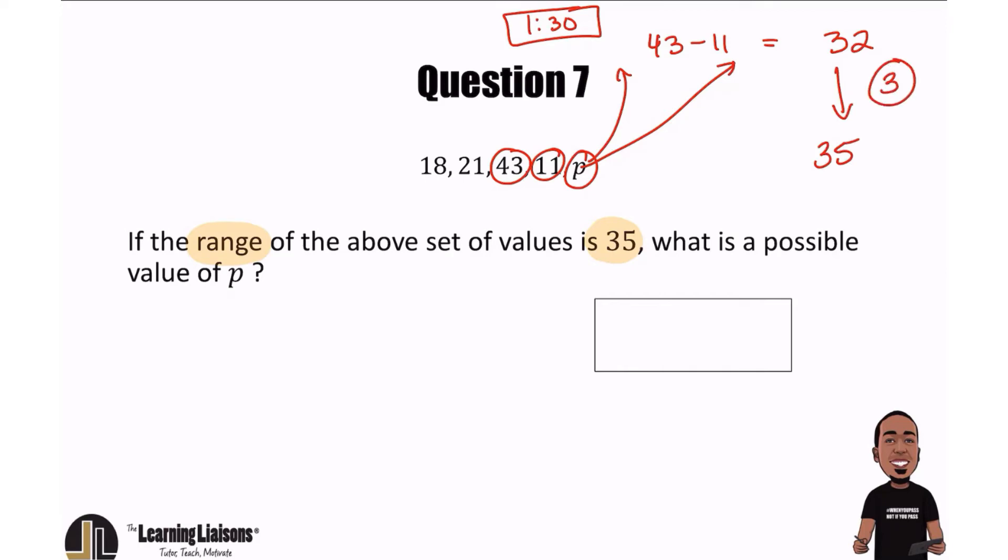And so what that tells me is that P over here needs to be either three numbers below 11 or three numbers above 43.